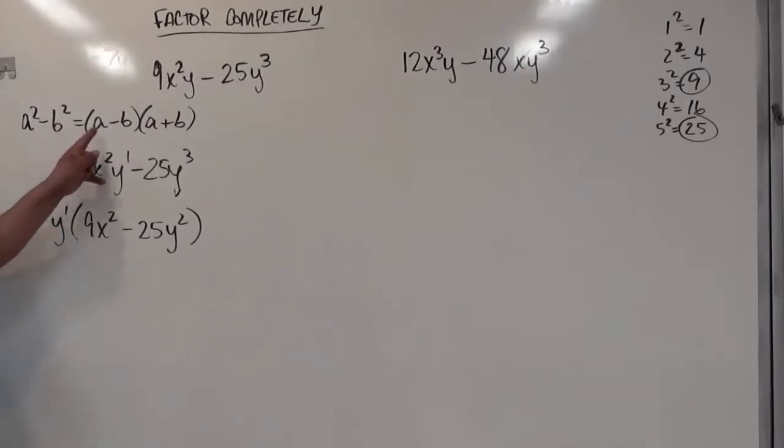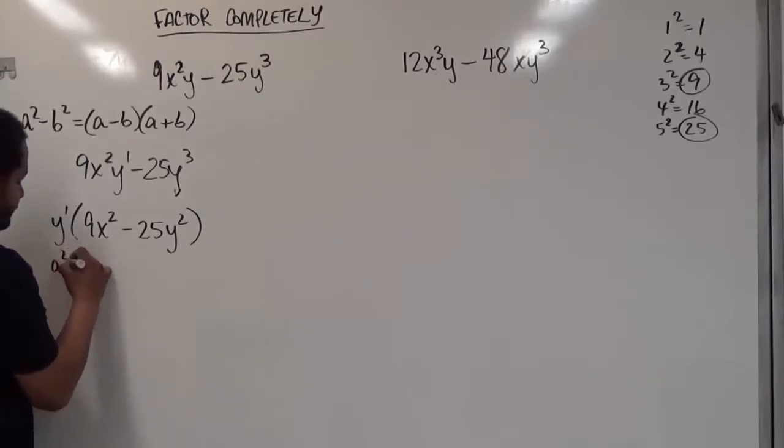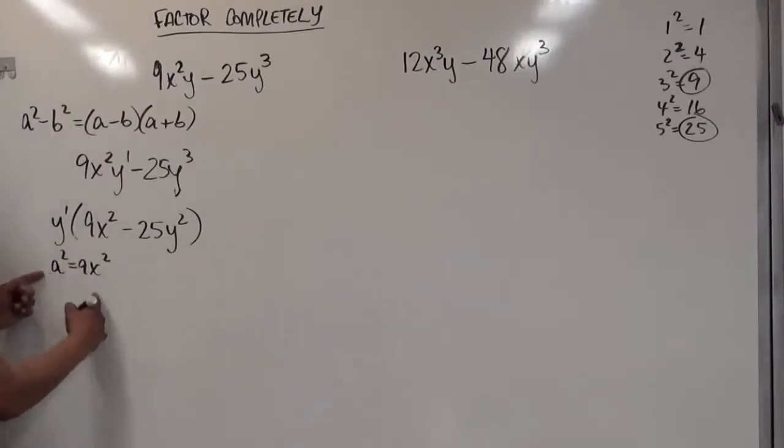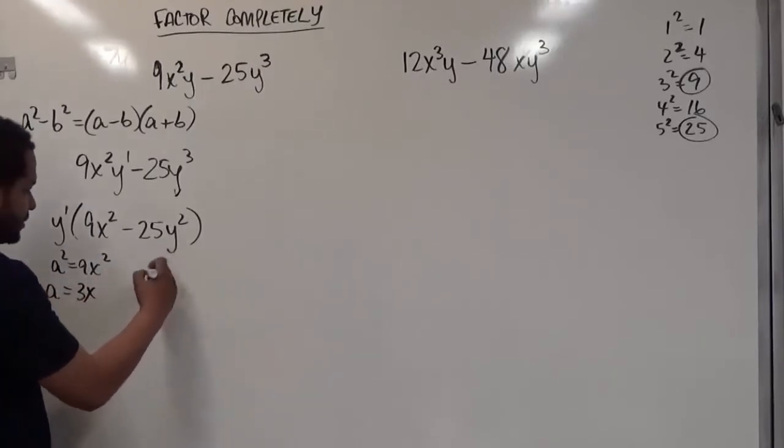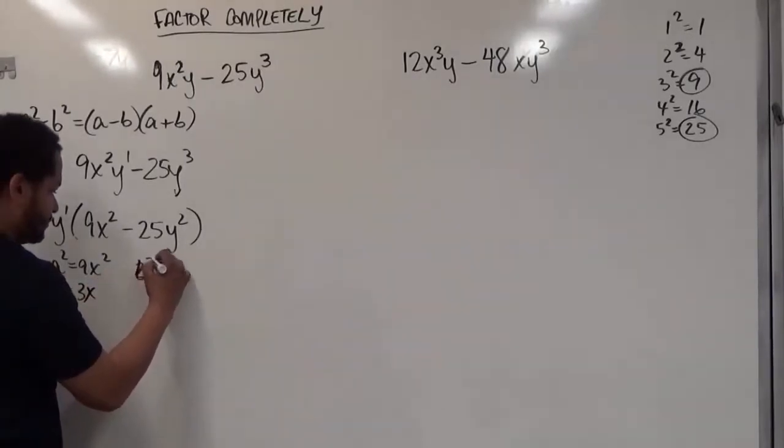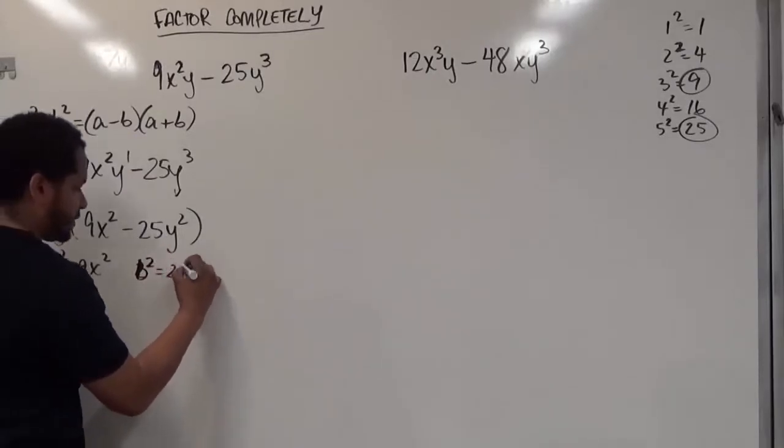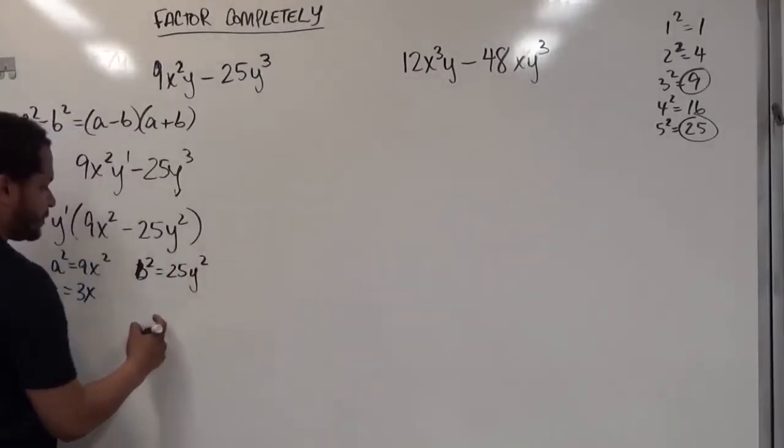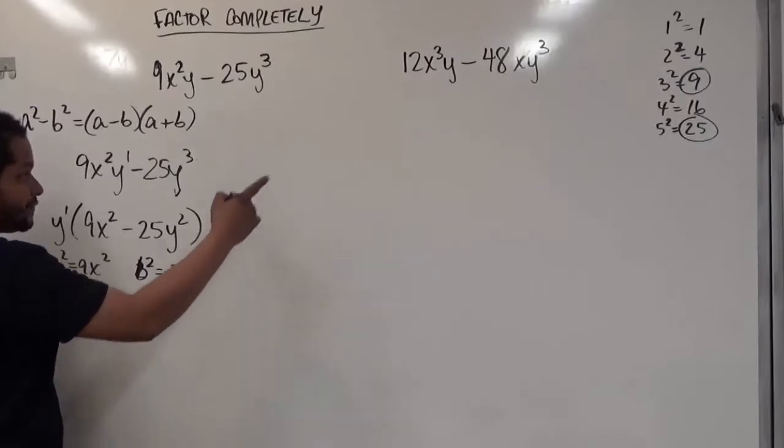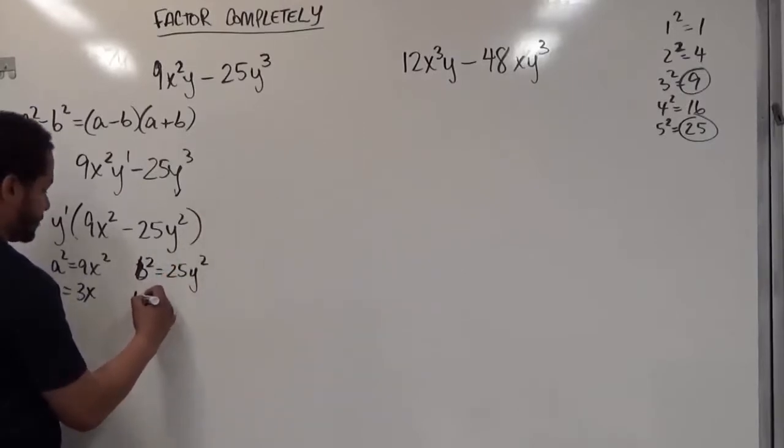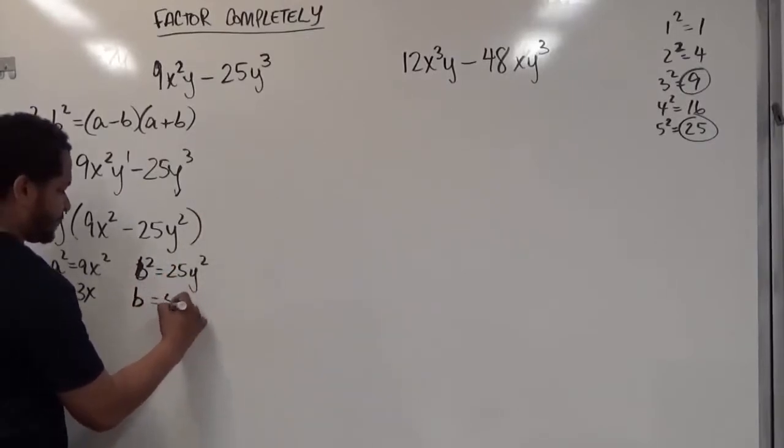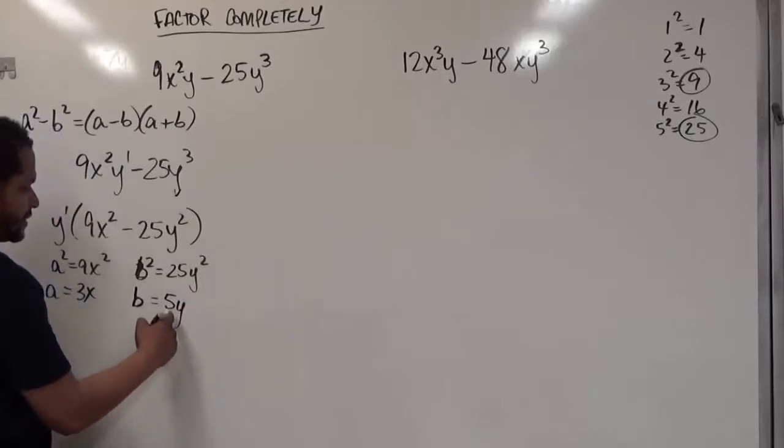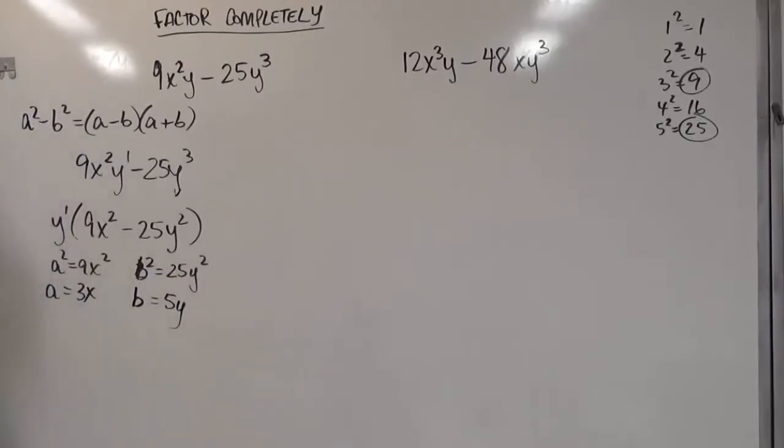Now as far as my a term and my b term go, I'm considering that a squared is equivalent to 9x squared. If I take the square root of both sides, I'm going to have a equals 3x. My b term, which is b squared, which is 25y squared, I'm going to get 5 squared. So this b becomes 5y, and when I square 5y, I get 25y squared.